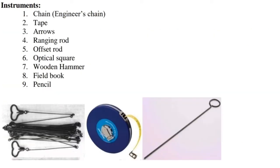Instruments: First, chain — Engineer's chain. Second, tape. Third, arrows. Fourth, ranging rod. Fifth, offset rod. Sixth, optical square. Seventh, wooden hammer. Eighth, field book. Ninth, pencil.